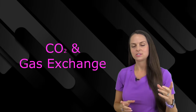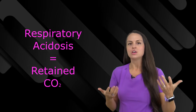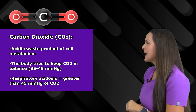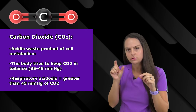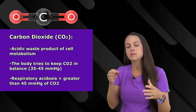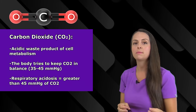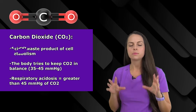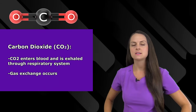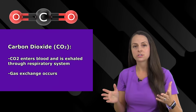To help us understand this condition, let's talk about carbon dioxide and gas exchange. With respiratory acidosis, we have established that we have retained carbon dioxide levels. Carbon dioxide is a waste product created from cell metabolism, and your body needs it within a certain range — about 35 to 45 millimeters of mercury. Too much is bad and too little is bad. In acidosis, we have a level greater than 45, because we're retaining way too much CO2. Your body takes it, dumps it into the blood, and your blood will carry it through the heart to the lungs where gas exchange occurs.